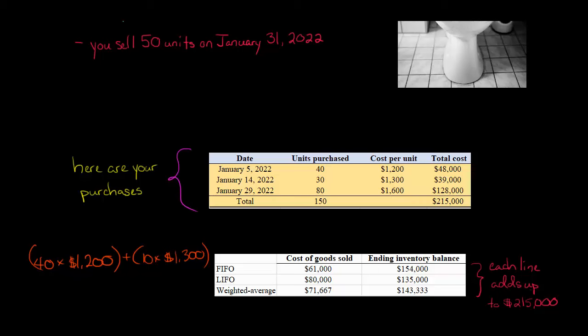Now, LIFO. We're going to do LIFO next. So LIFO, last in first out. So the most recent purchases are going to go through cost of goods sold first. We sold 50 units, so 50 of these 80. So we're going to have, this is going to be simple, we just take 50 times $1,600. And that's going to give us $80,000 for cost of goods sold.